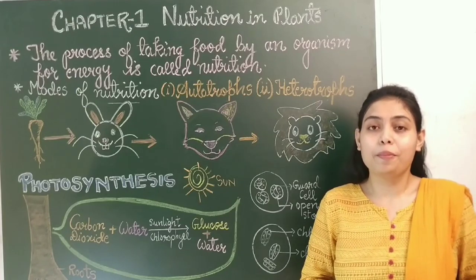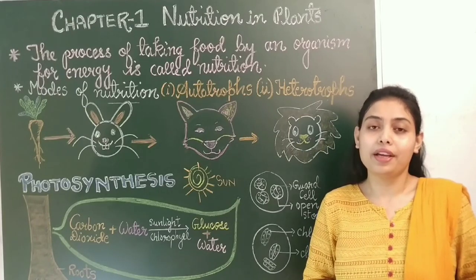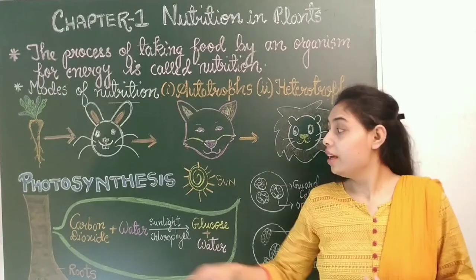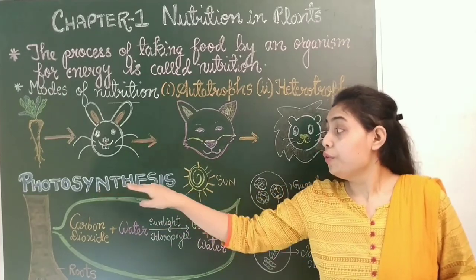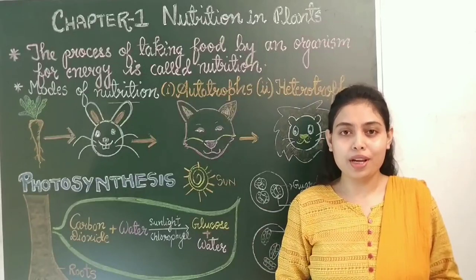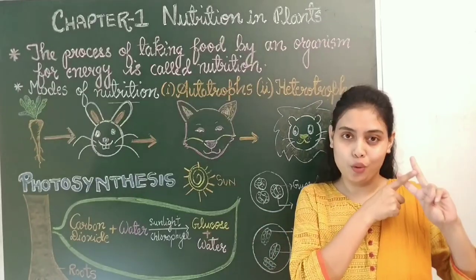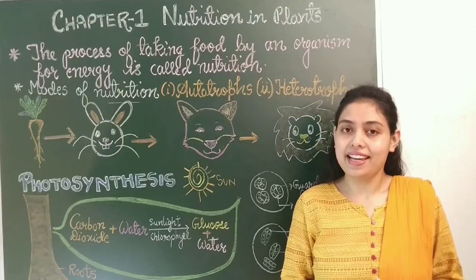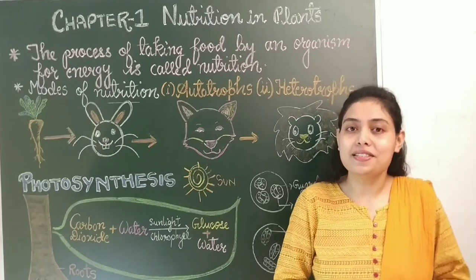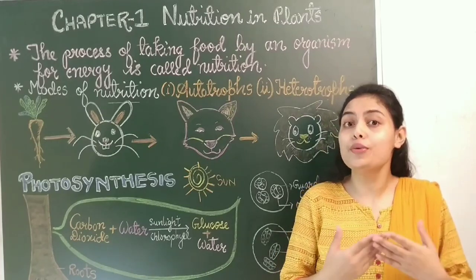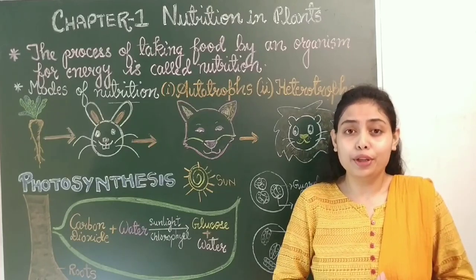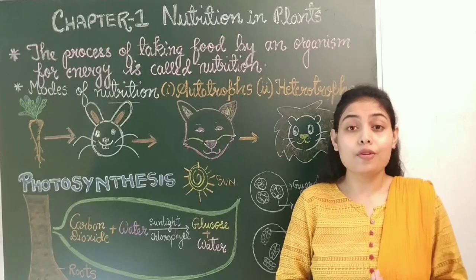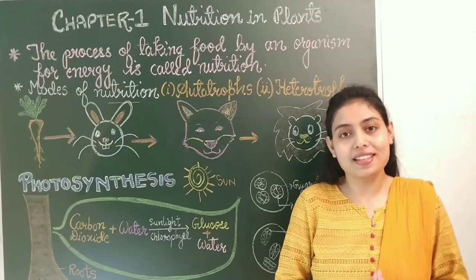Plants are known as autotrophs because they can prepare their own food by the process called photosynthesis. The word photosynthesis can be separated to form two smaller words: photo, which means light, and synthesis, which means to produce. As the plants are producing their food in the presence of sunlight, the process is known as photosynthesis.